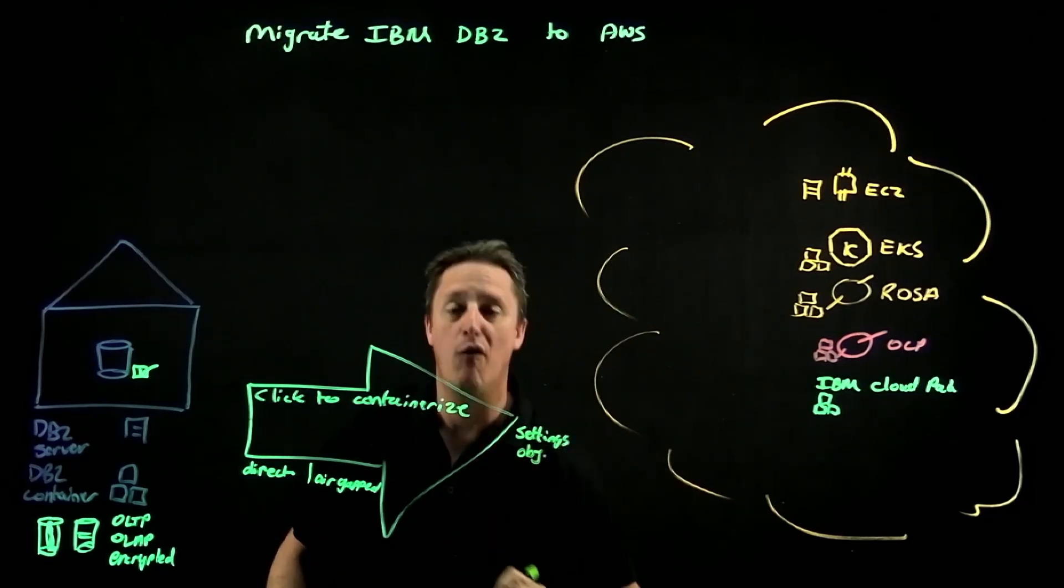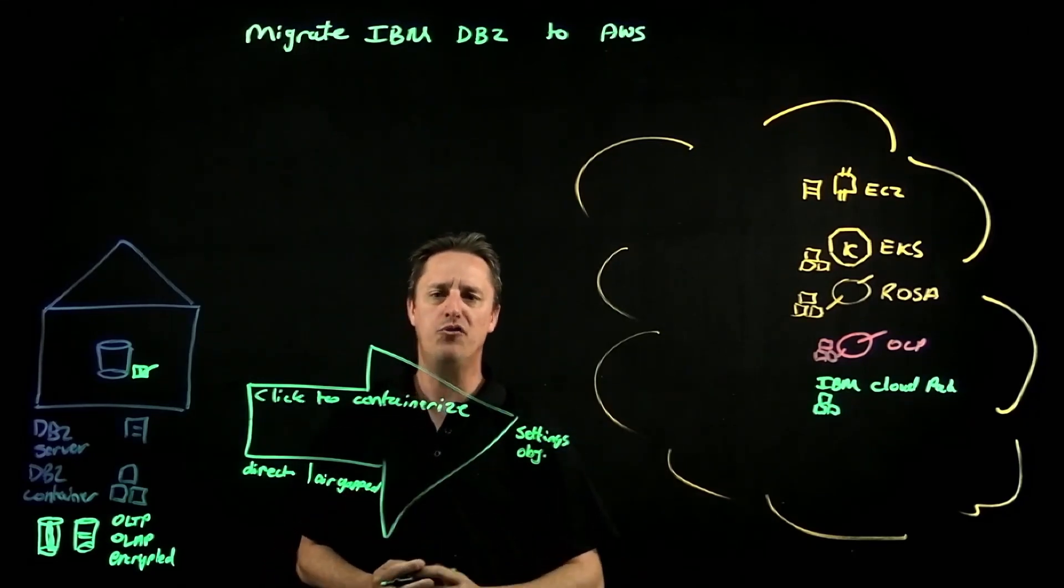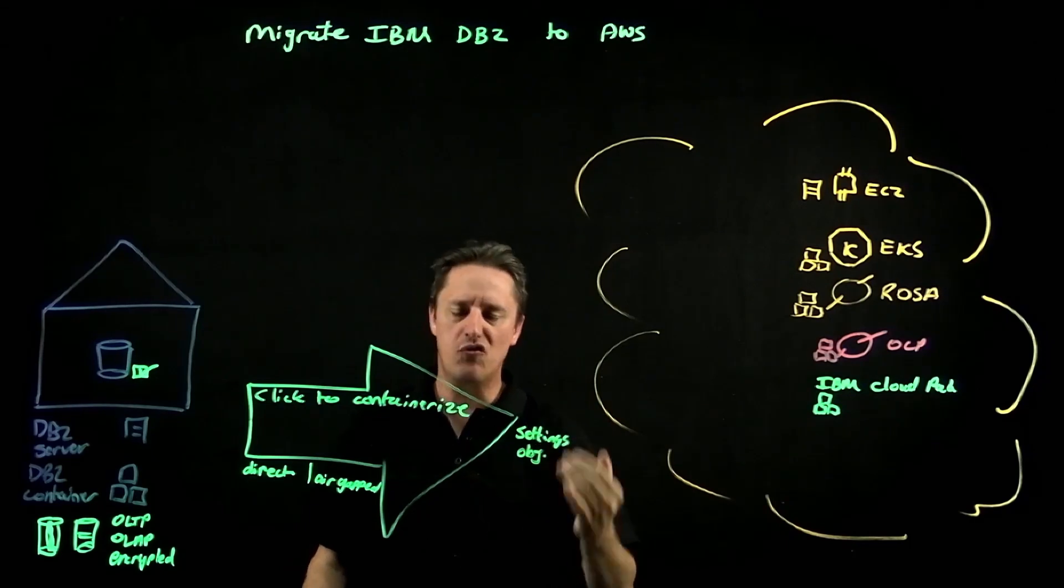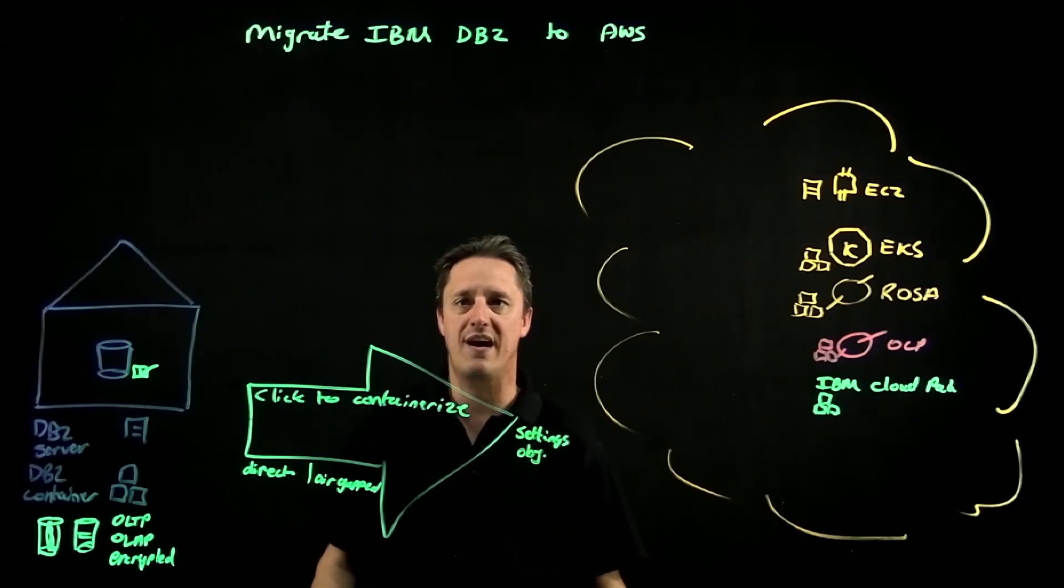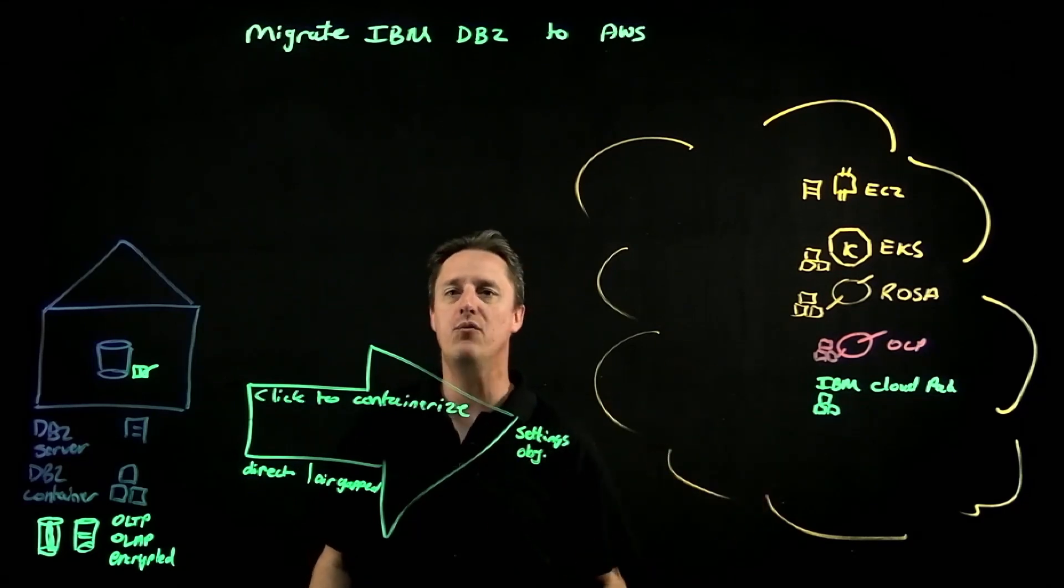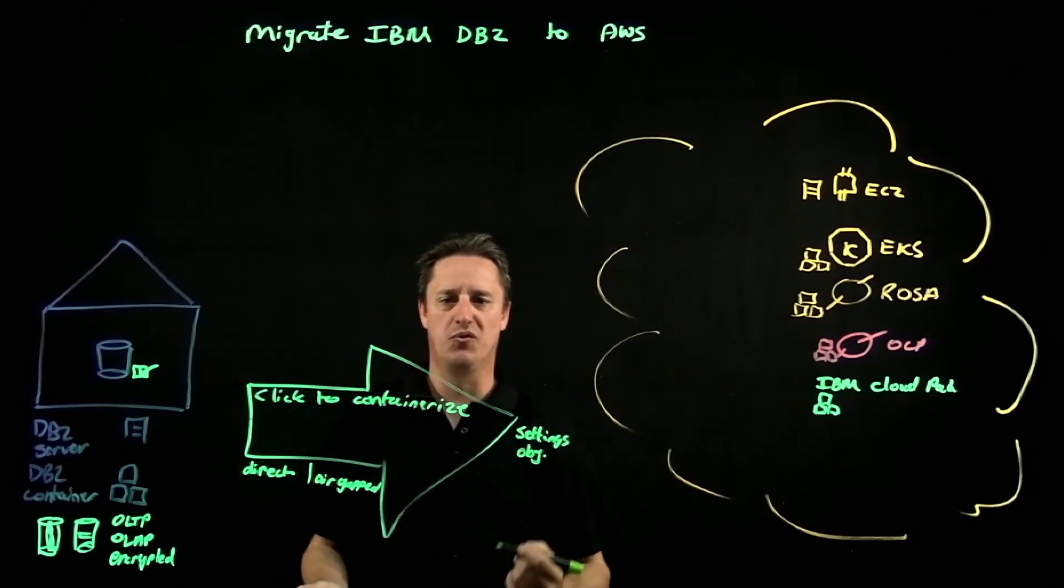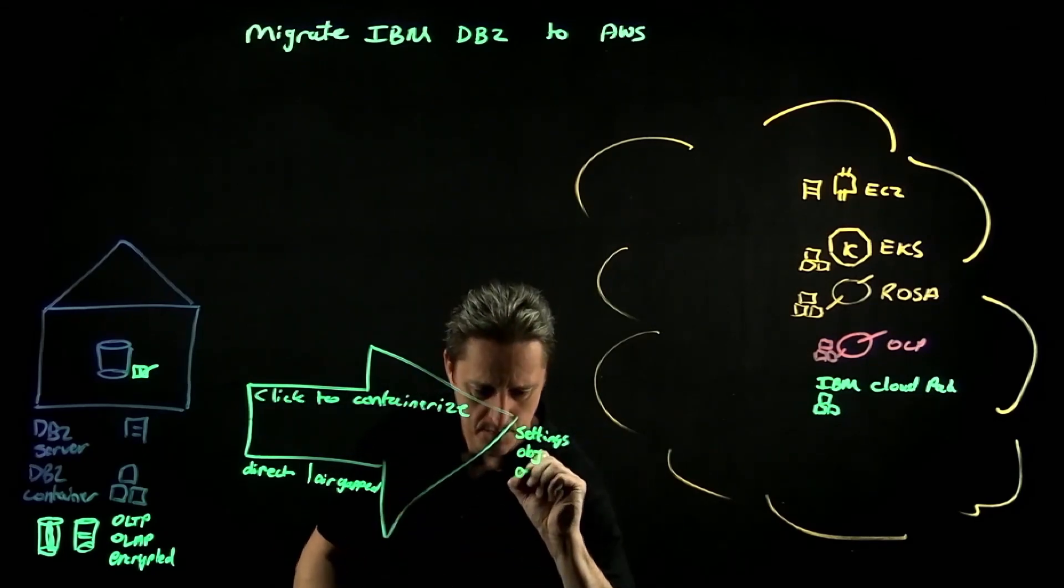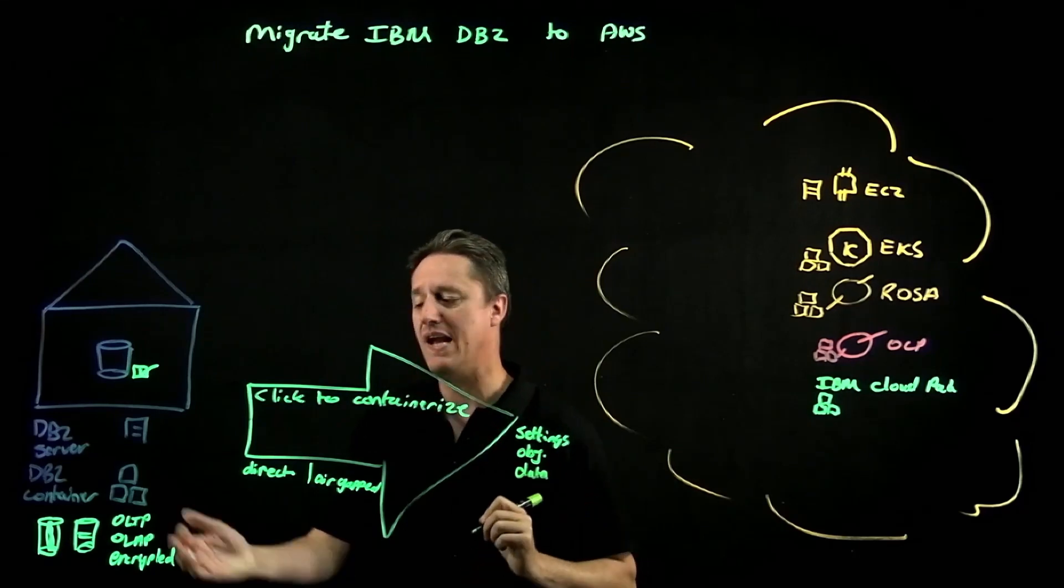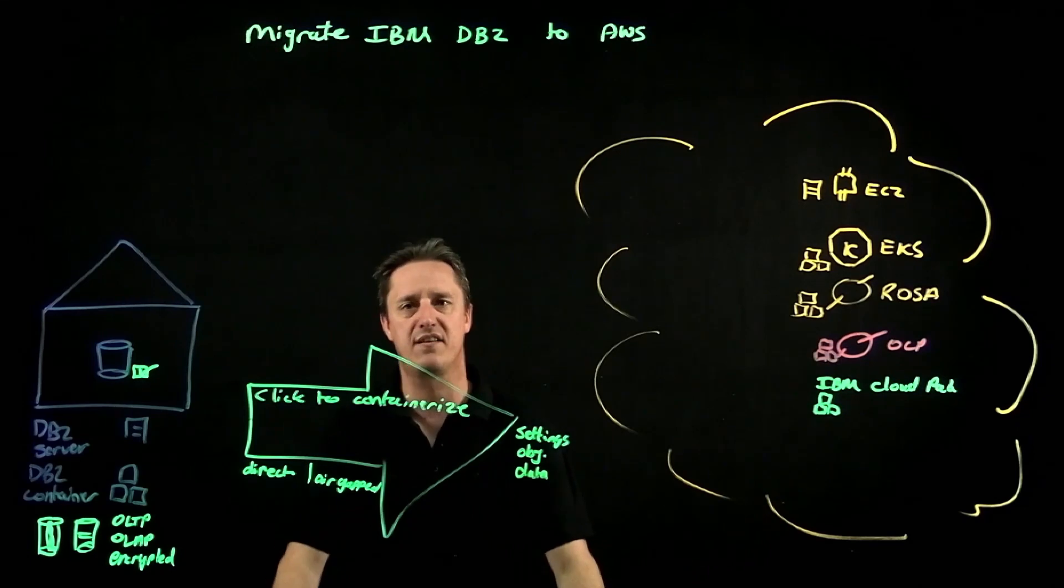The actual objects of the database, so the database itself, the schema structure, but also external things like functions, stored procedures, code that sits peripherally to the database itself, those can be recreated. The data inside the actual database, this is the largest payload, and this is where being able to actually interact with that encrypted source and recreate that as an encrypted destination.